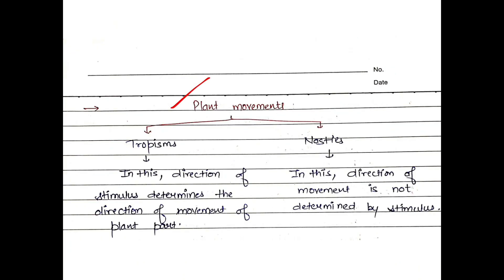Next is plant movements. There are two types of plant movements: Tropism and Nastic movements. Tropism is when the stimulus determines the direction of the response. If the stimulus doesn't determine the direction of response, then it is called nastic movement.